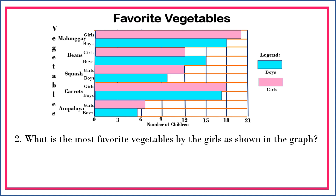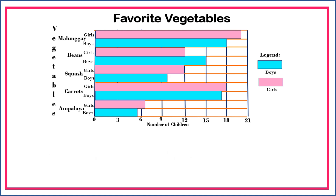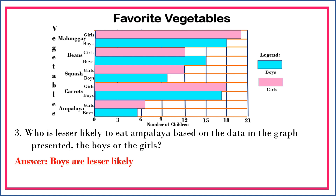The most favorite vegetable among the girls as shown in the graph is malunggay. Another question: who is less likely to eat ampalaya based on the data in the graph — the boys or the girls? Boys are less likely to eat ampalaya than girls.